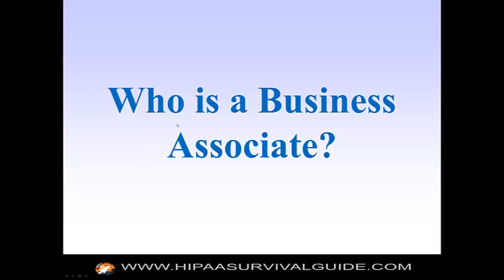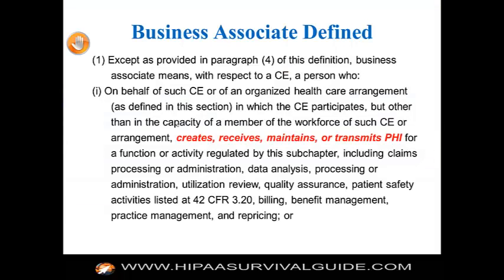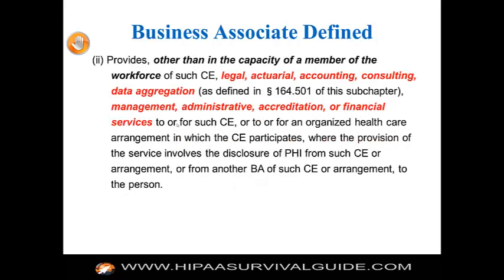One of the key topics we want to cover today is who is a business associate. The business associate definition was changed under the omnibus rule. What stayed the same was: any person or entity that creates, receives, maintains, or transmits PHI for a function or activity regulated by this subpart or on behalf of a covered entity is going to be a business associate — that's the foundational definition.